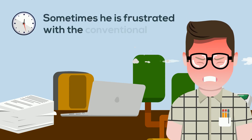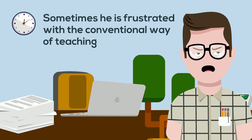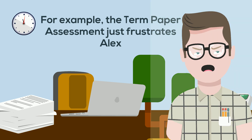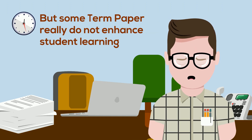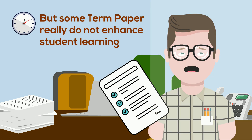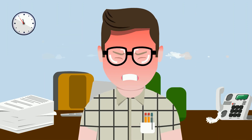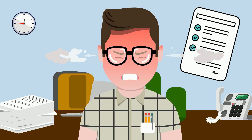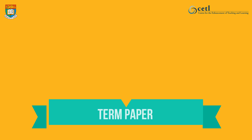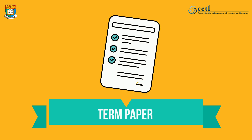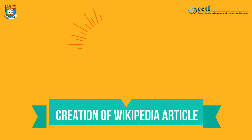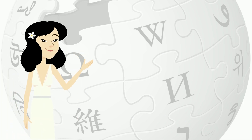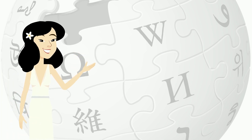Sometimes he's frustrated with the conventional way of teaching. For example, the term paper assessment just frustrates Alex. Some term papers really do not enhance student learning — most term papers are terrible, just tragic pieces of work. And in an attempt to address the problem of the term paper, Alex decided to replace it by asking students to create a Wikipedia article. Before we look at how Alex utilised Wikipedia, let's find out more about it.